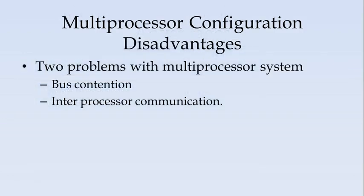Next, there are challenges associated with multiprocessor configuration. There are two main problems. One is bus contention — if more than one processor shares a common bus, the question of which processor should have control over the bus, i.e., which should be the bus master, becomes a problem, and there are ways to resolve these contentions. The second challenge is communication: how two or more processors in the system communicate with each other.